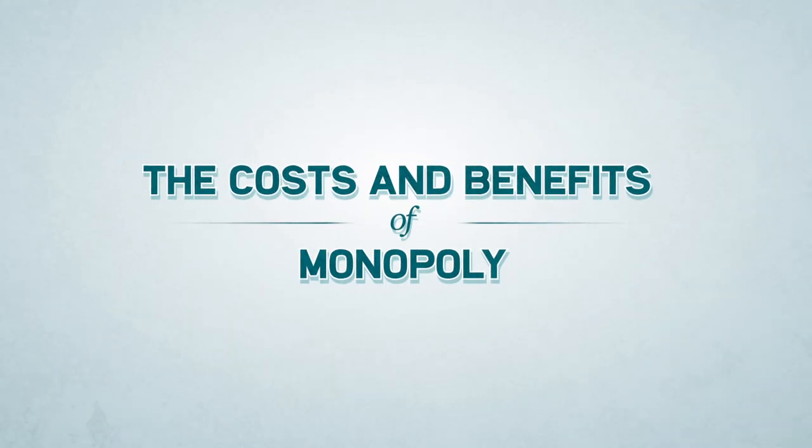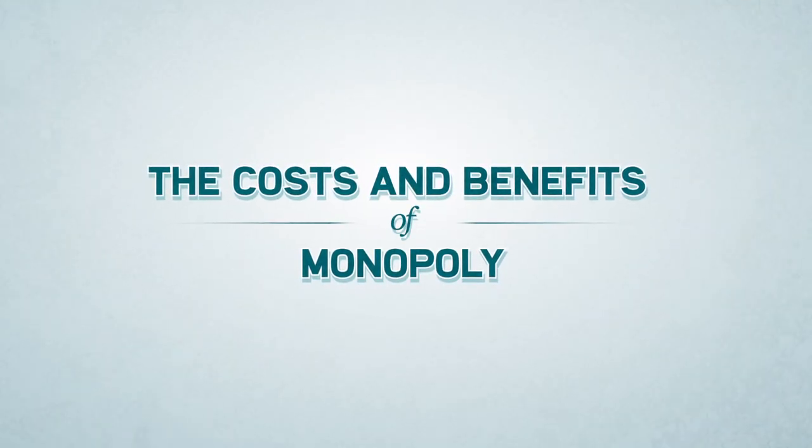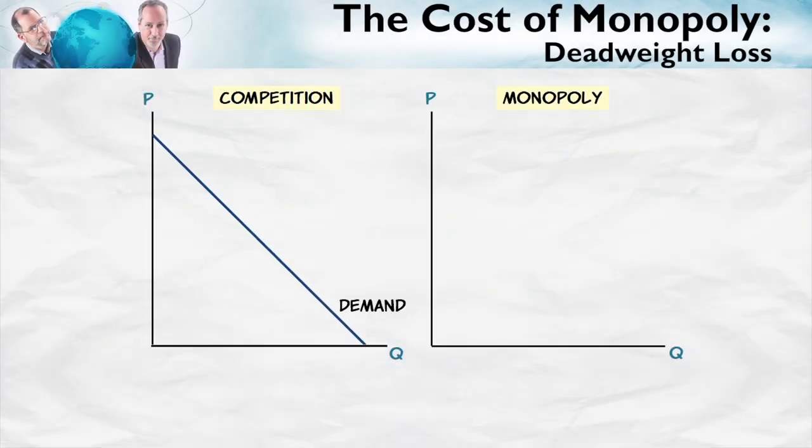In our final talk on monopoly, we're going to discuss the cost of monopoly but also the potential benefits. The major cost of monopoly is that compared to competition, monopoly is inefficient — it leads to a loss in the gains from trade, or a deadweight loss. Let's remind ourselves about the gains from trade under competition and then compare with monopoly.